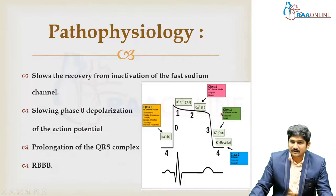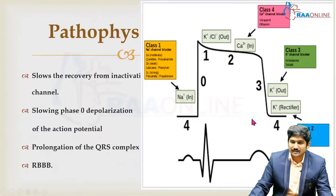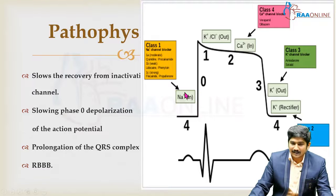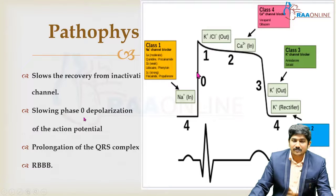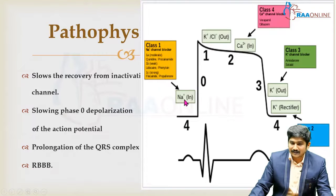So this is your action potential — you can see that slope 0 is because of the sodium channel. The tricyclic TCAs act at this sodium level, so this part of the action potential is altered. Slowing of phase 0, which is the depolarization or the contraction — the effective contraction curve — so it's phase 0 that gets affected. This correlates with your QRS complex. Since the sodium channel is affected, this phase 0 of the action potential is affected, thus causing QRS prolongation.